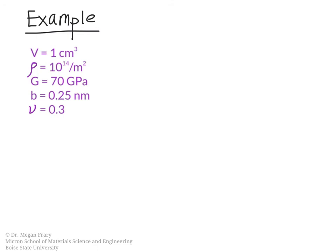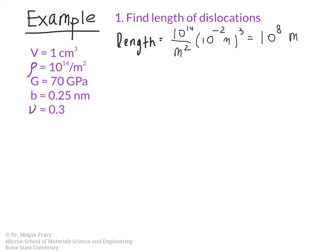So let's consider this example. Here's what we're given. We're given that we have 1 cubic centimeter of material with a dislocation density of 10 to the 14th per meter squared, which is a moderate dislocation density. Shear modulus of 70 GPa, the Burgers vector is 0.25 nanometers, and our Poisson's ratio is 0.3. The first thing we're going to do is calculate the total length of dislocations that are present. We see that the length is equal to the dislocation density times the volume, and this gives us a total of 10 to the 8th meters of dislocation line just in this little 1 centimeter cube.